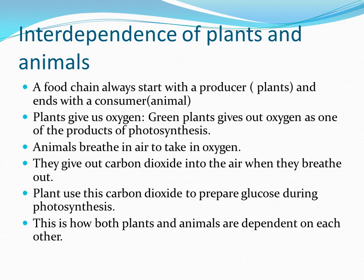A food chain always starts with a plant and ends with an animal. Plants give out oxygen, animals breathe that oxygen and give out carbon dioxide, and the plants use that carbon dioxide to prepare glucose. This is how both plants and animals are dependent on each other.